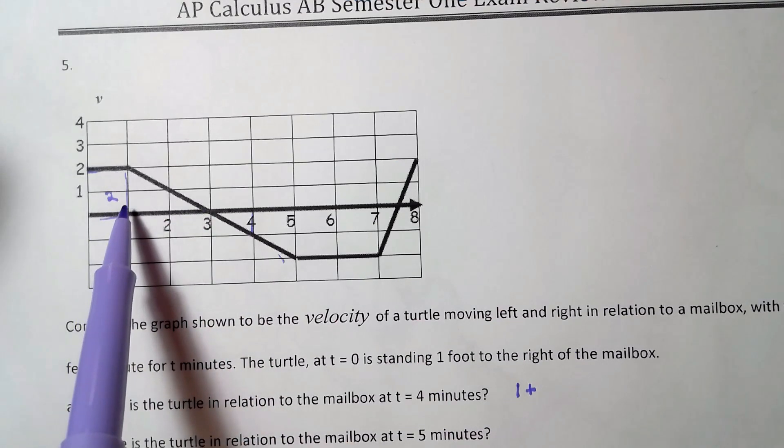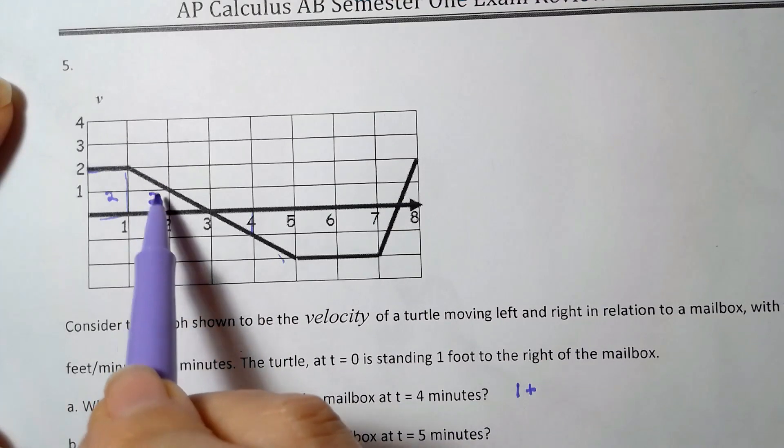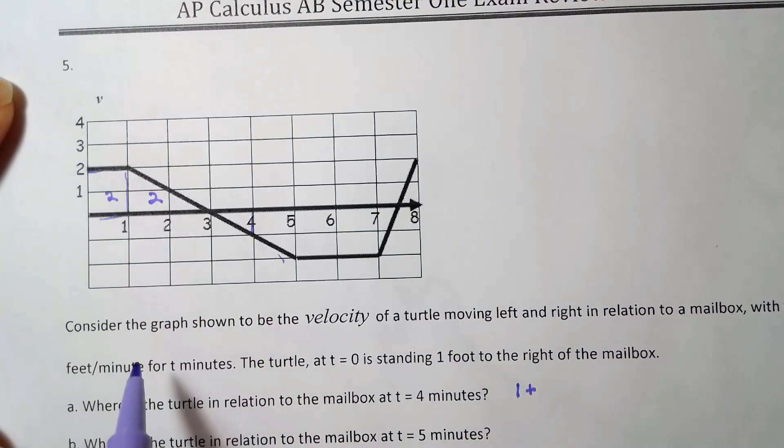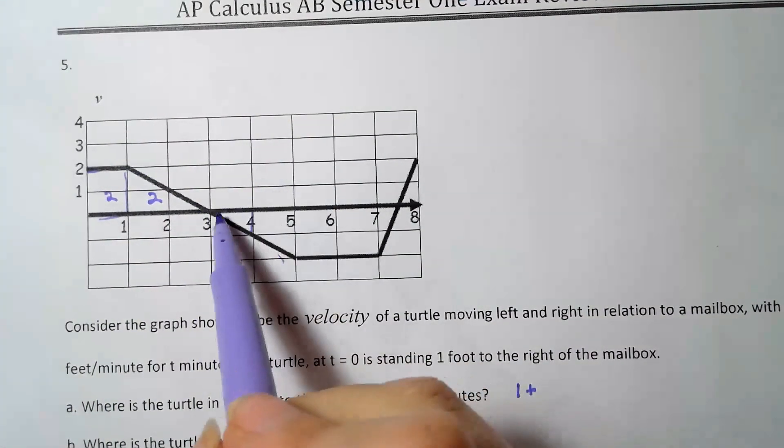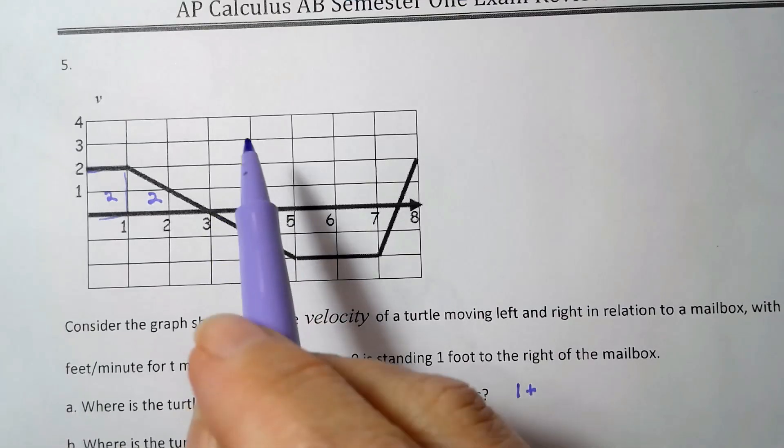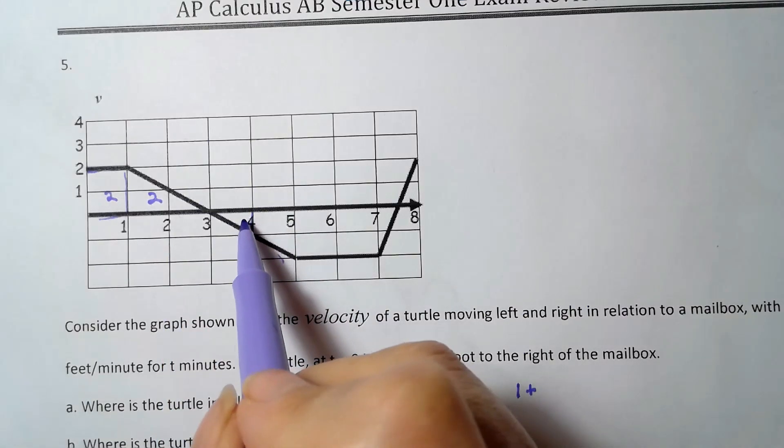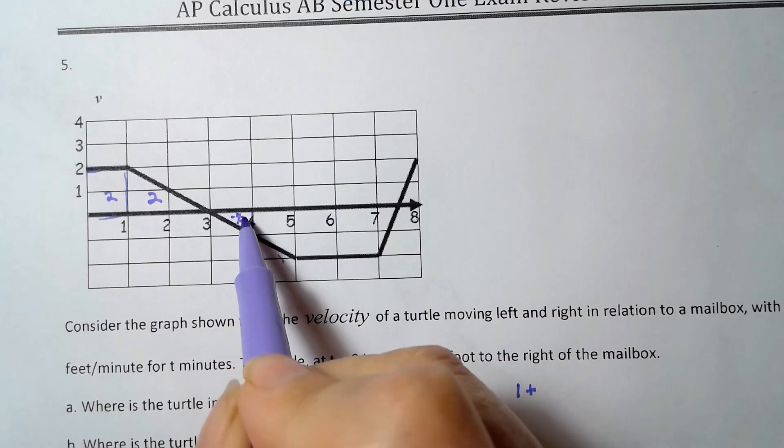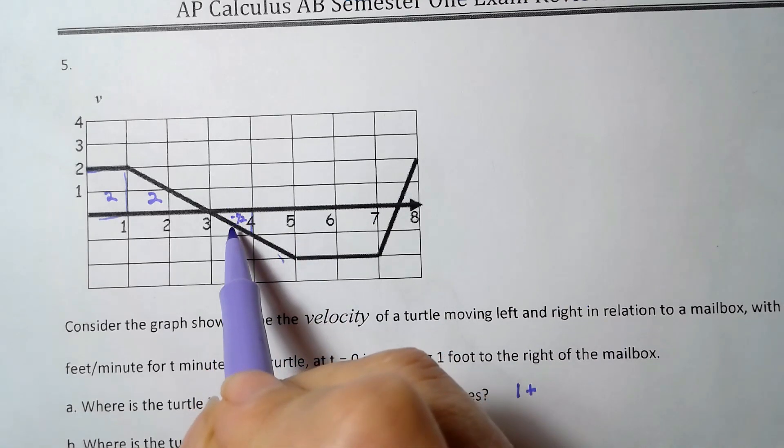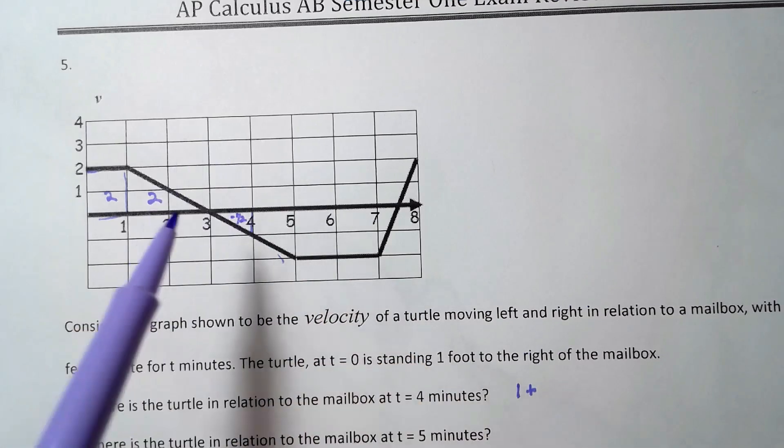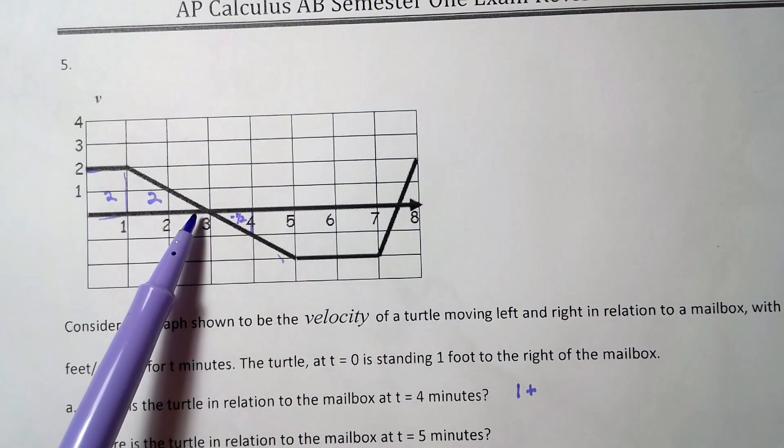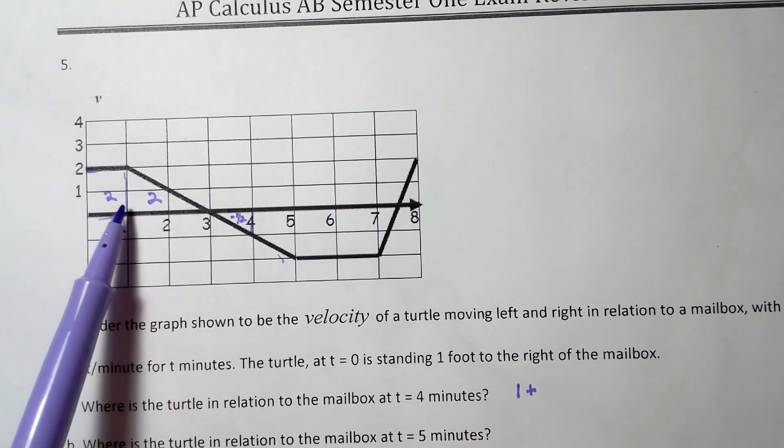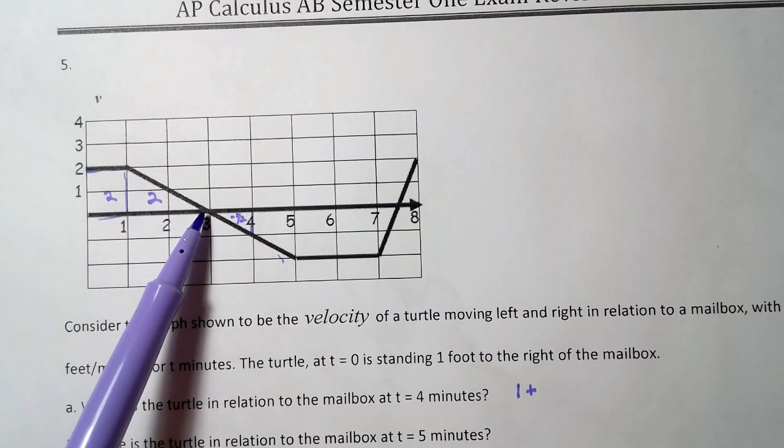So this whole area of this whole triangle here is two. Now the area of this little triangle is below, right, so we're going to subtract it out. And it's one half times one times one, so it looks like negative one half. So what I have is at three he's the one foot to the right plus four feet, so he's already five feet to the right of the mailbox there.